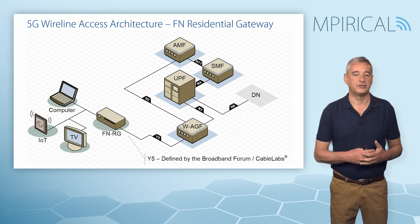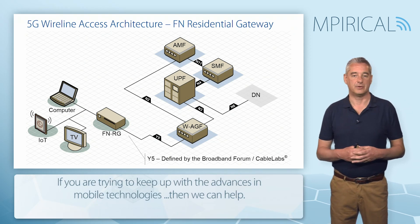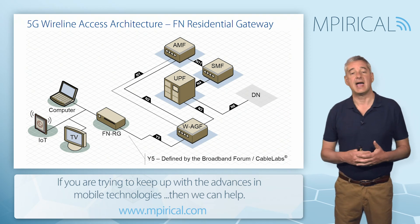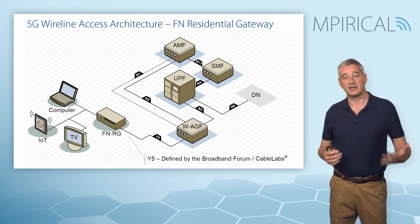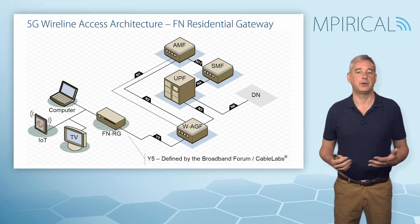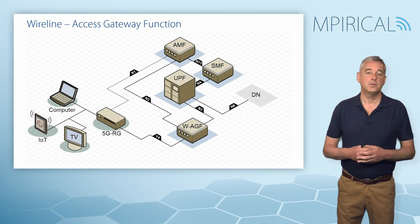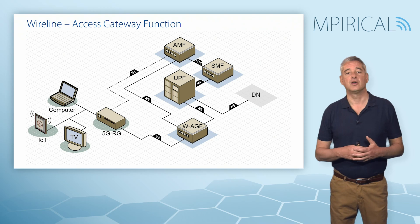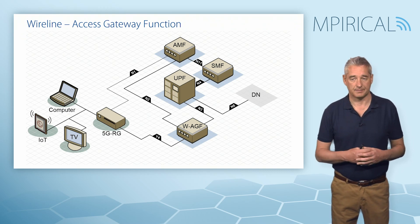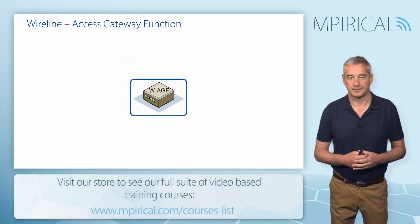The most significant difference for the Fixed Network Residential Gateway is that it does not support the N1 reference or NAS signaling. Instead, NAS passes between the AMF and the Wireline Access Gateway Function. In other words, the Fixed Network Residential Gateway doesn't really understand any of the 3GPP protocols. Whether we're talking about a 5G Residential Gateway or a Fixed Network Residential Gateway, they will both connect into the 5G core via the Wireline Access Gateway Function.